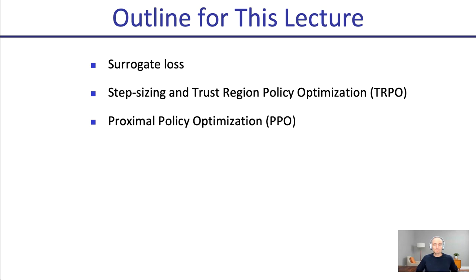In this lecture, we're going to look at some improvements to that. At the end of last lecture, we saw improvements in variance of estimating the advantage. We're going to look at some additional complementary improvements here. One is something called a surrogate loss. Then we'll look at step sizing — because a gradient tells you which direction to go, but not how far. We'll also look at higher-order optimization methods using trust regions, which can have better step directions and lead to more stable optimization through trust region policy optimization.